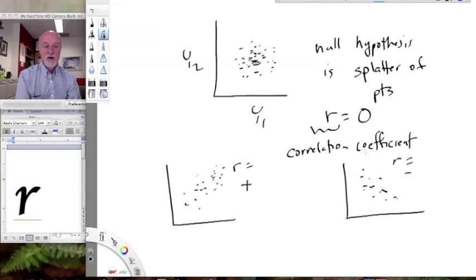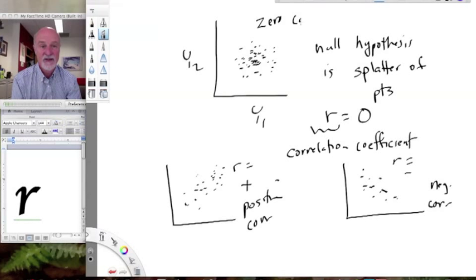So we have positive correlation, we have negative correlation, and we have zero correlation. And our null hypothesis is zero correlation. So when we do statistics on correlation, we're asking whether r is significantly different from zero and whether it's significantly negative or significantly positive.